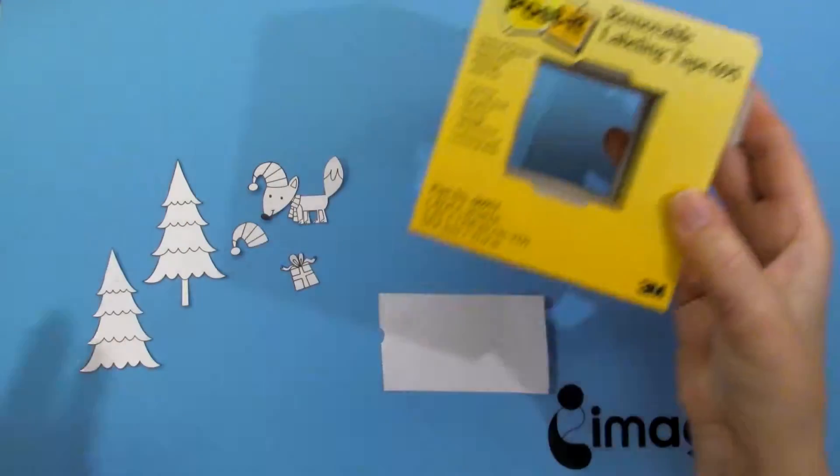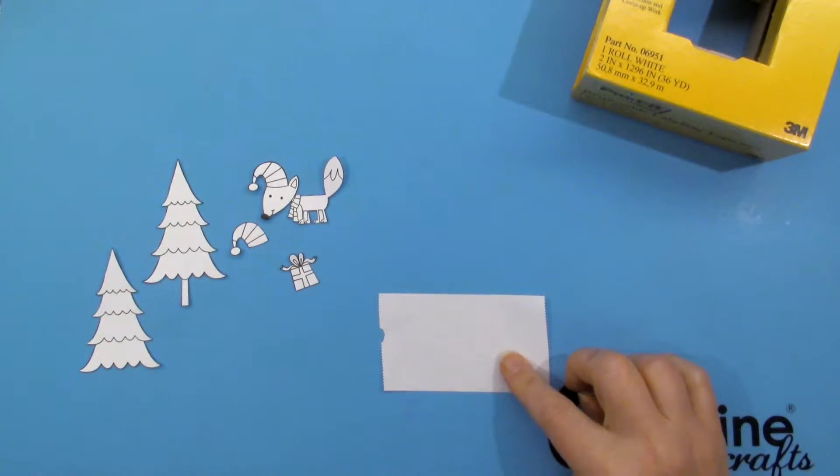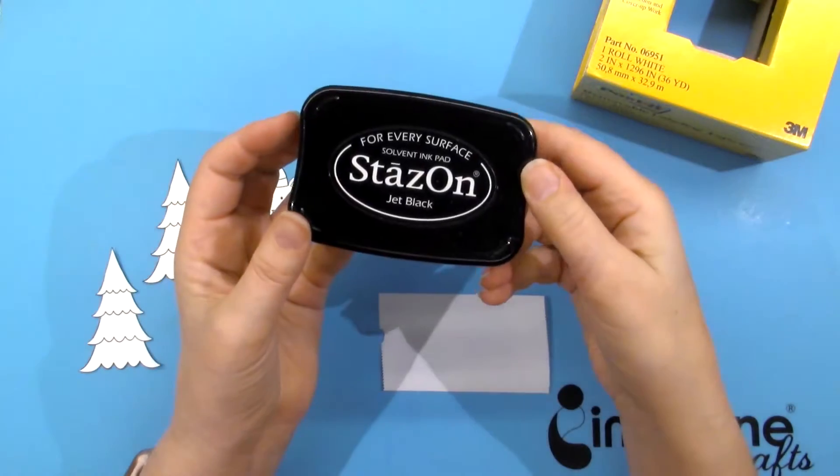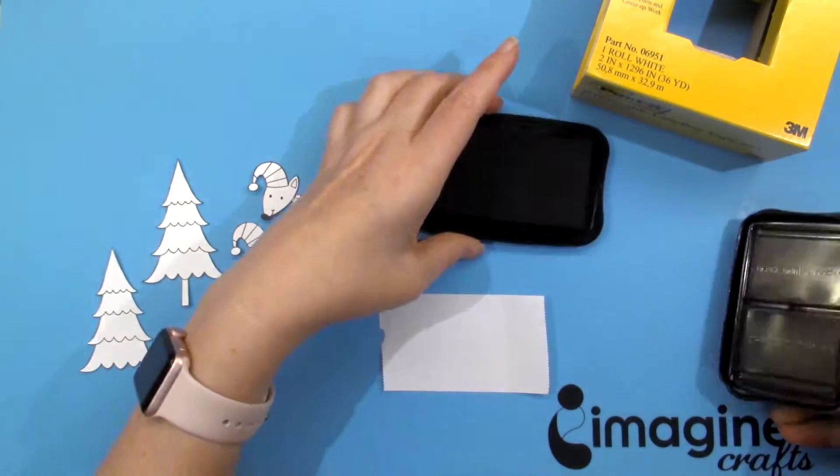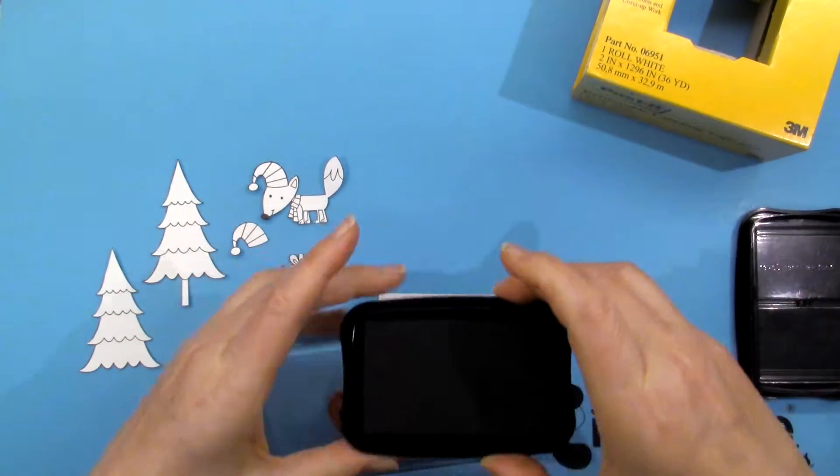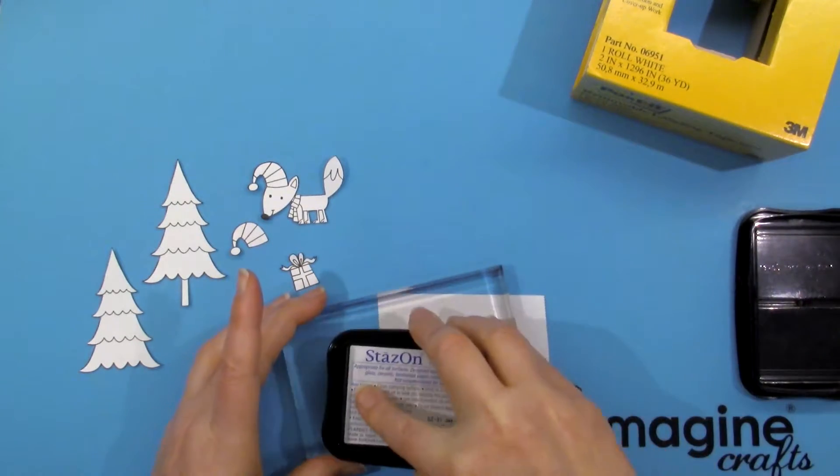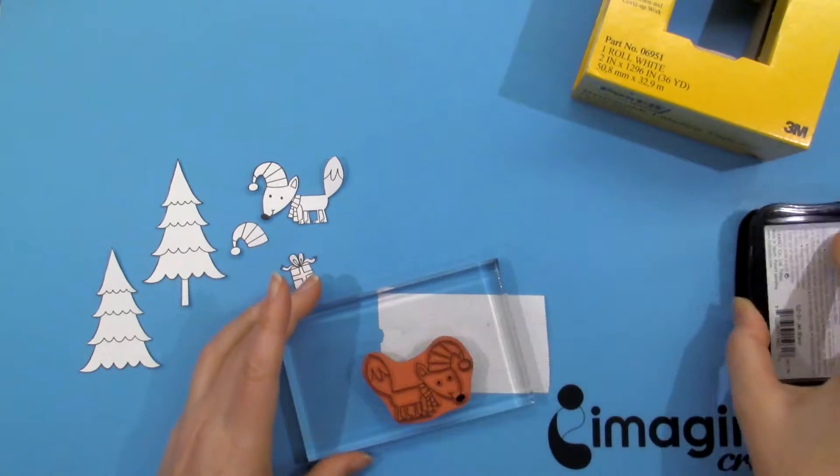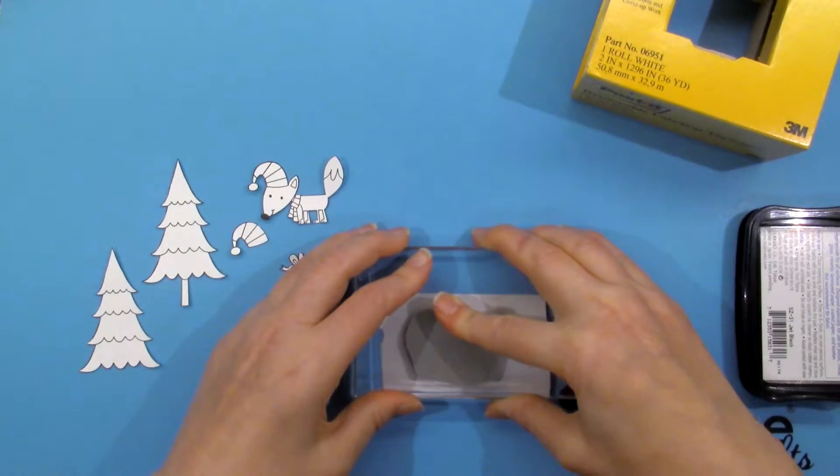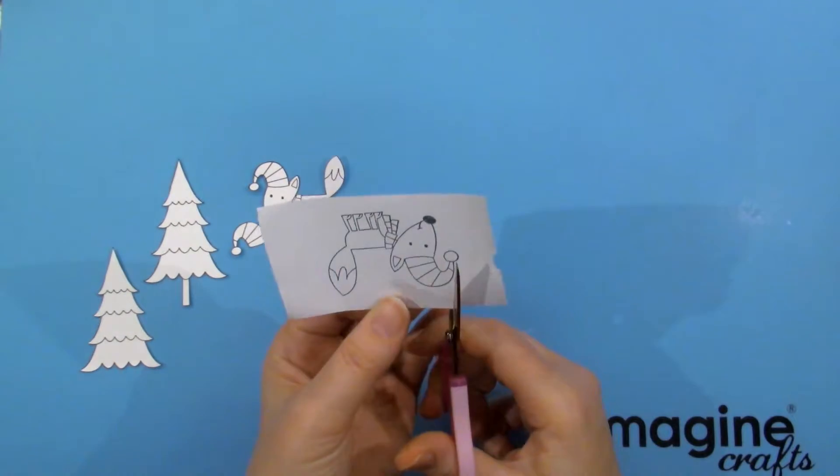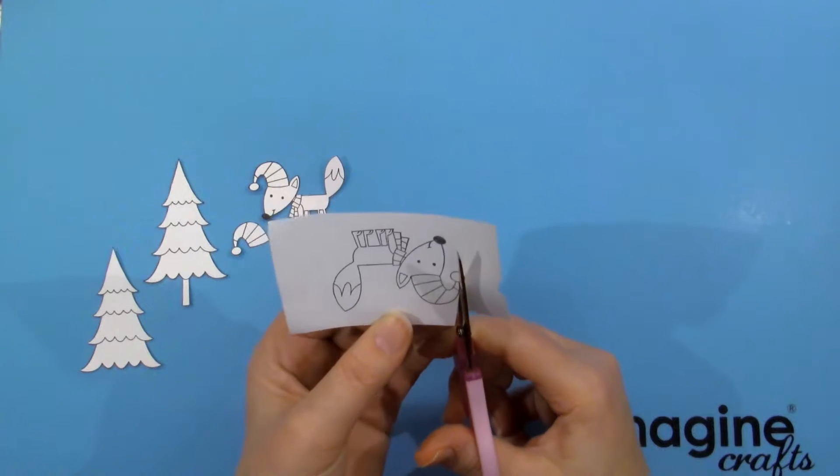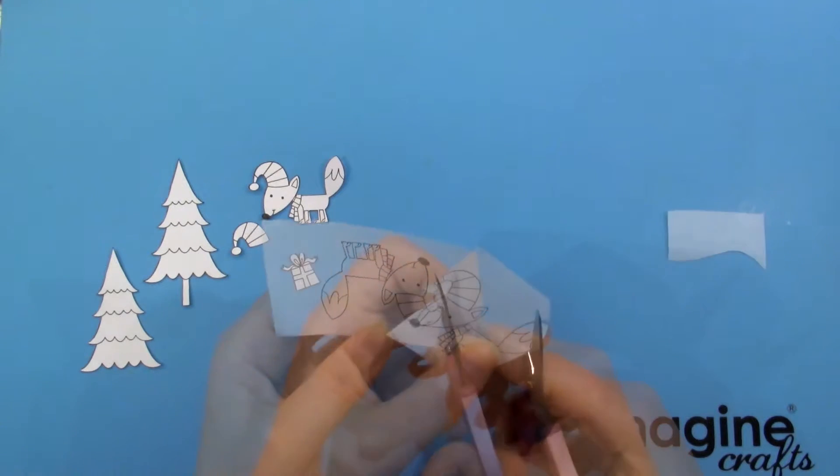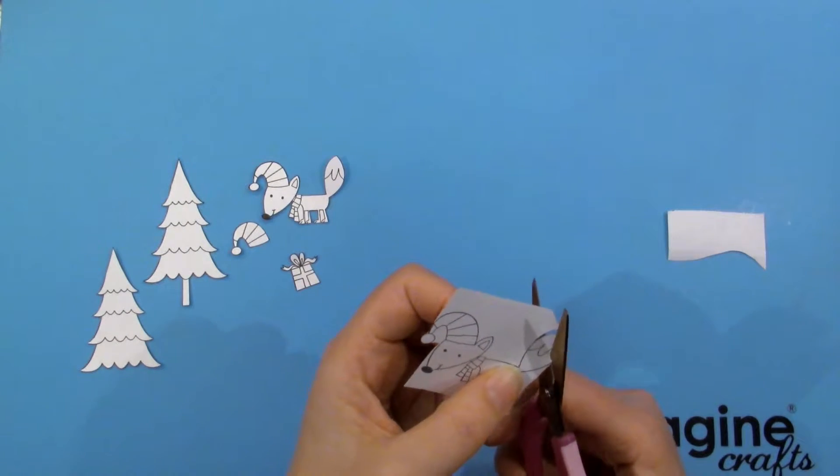Next I created a mask out of post-it labeling tape. I switched to Jet Black StazOn ink to stamp this since it dries very quickly. The labeling tape has a slight coating on it so some inks take much longer to dry when stamped on it. StazOn is made to stamp on non-porous surfaces so it doesn't have this issue. I'm only going to cut around the parts I want to protect. The hat, the scarf, and the tail.